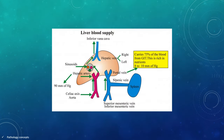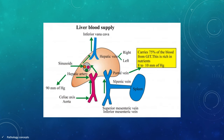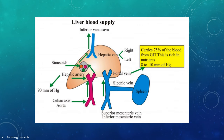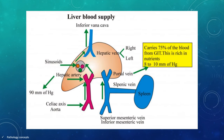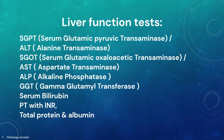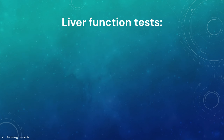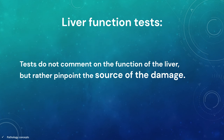The liver is a unique organ due to its dual blood supply from the portal vein approximately 75% and hepatic artery approximately 25%. The liver function test typically includes alanine transaminase also called SGPT, aspartate transaminase also called SGOT, alkaline phosphatase, gamma glutamyl transferase, serum bilirubin, prothrombin time, the international normalized ratio, total protein and albumin. The term liver function test is a misnomer as many of the tests do not comment on the function of the liver but rather pinpoint the source of damage.